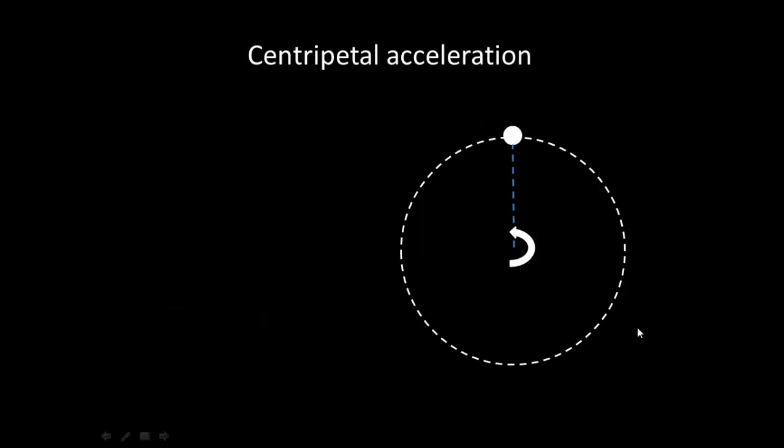Now that we have defined circumference, period, and frequency, let's consider the acceleration itself more specifically. So imagine a ball of mass m is moving around a circle of radius r with a constant speed v.